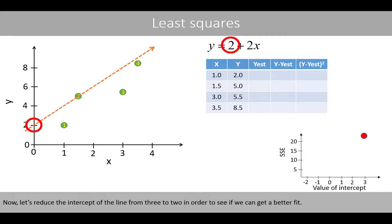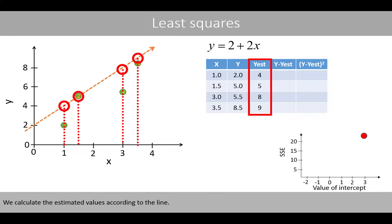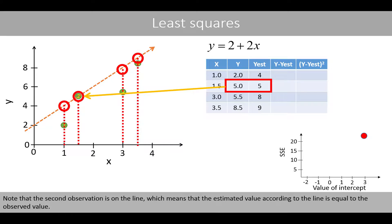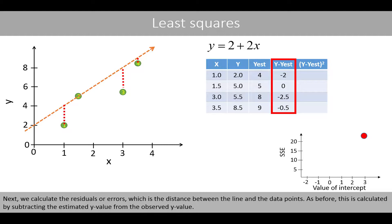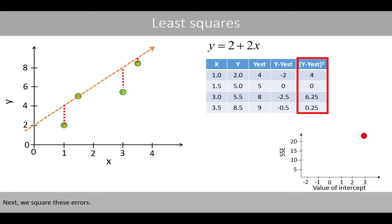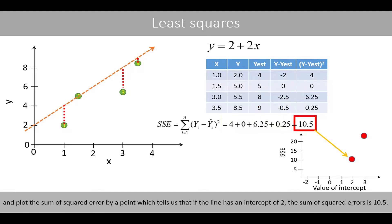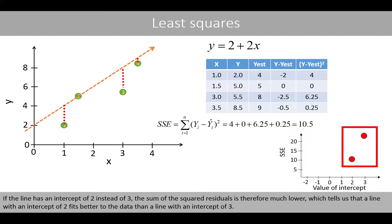Now, let's reduce the intercept of the line from 3 to 2 in order to see if we get a better fit. We calculate the estimated values according to the line, the residuals or errors, then square and sum them. A line with an intercept of 2 results in a sum of squared errors of 10.5, which is much lower than 24.5. This tells us that a line with an intercept of 2 fits much better to the data than a line with an intercept of 3.